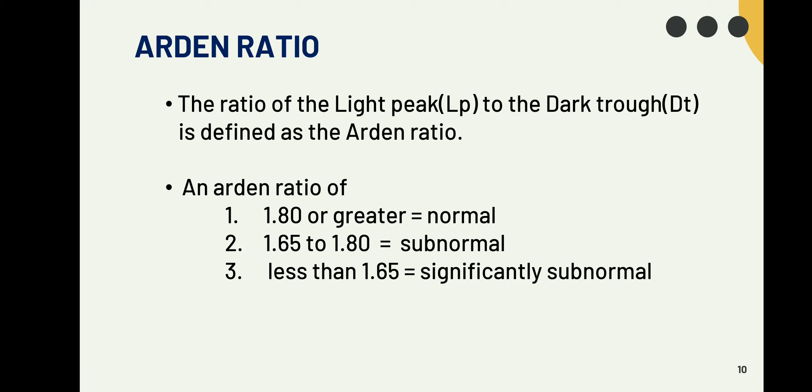In the Arden ratio, 1.80 or greater is considered normal. 1.65 to 1.80 is subnormal, and less than 1.65 is considered significantly subnormal condition.